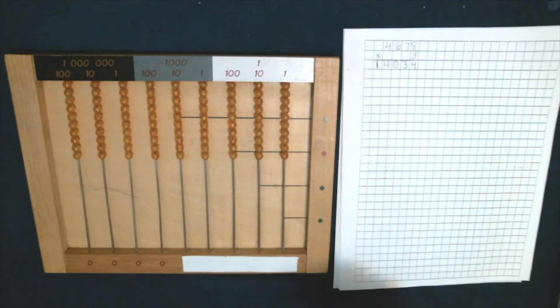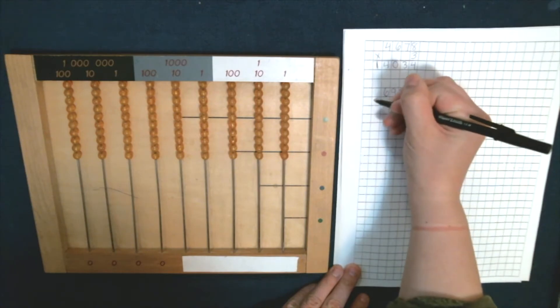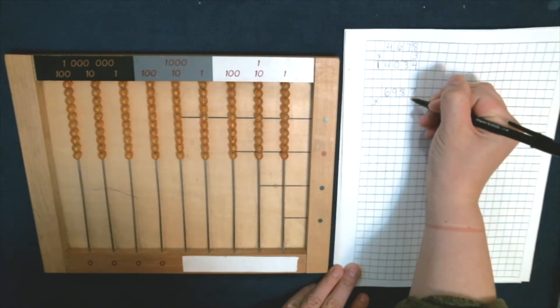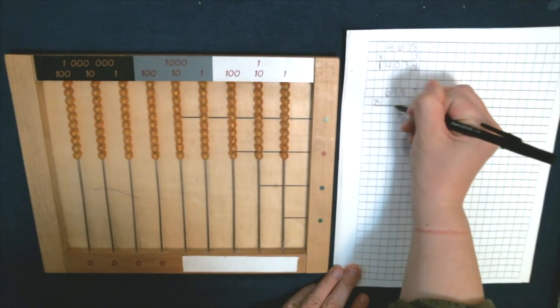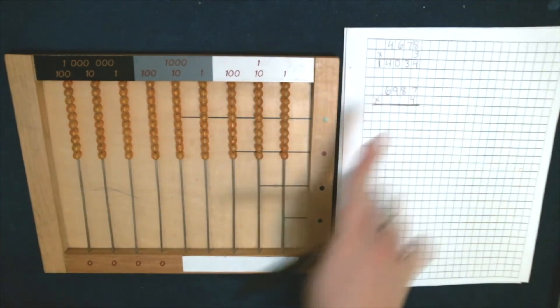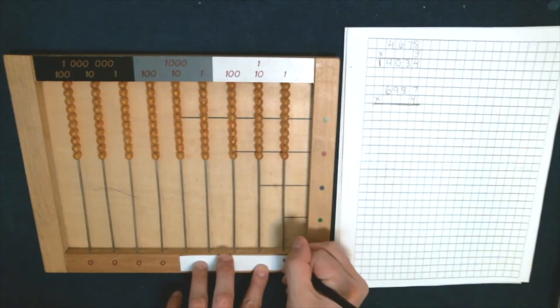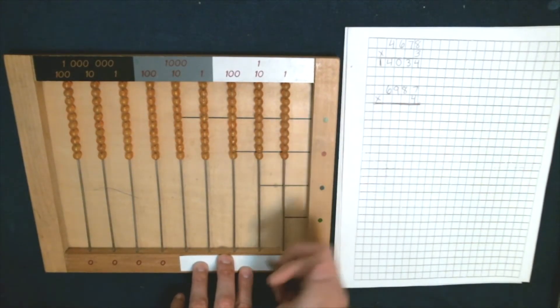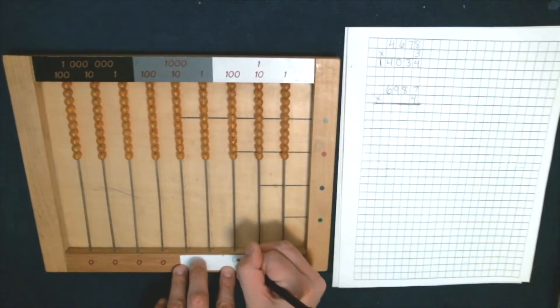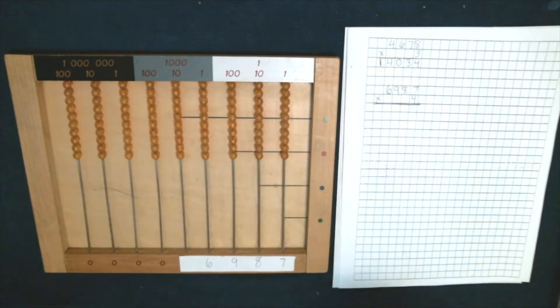We're going to do 6,987 times four. I'm going to write my multiplicand on my strip of paper and make sure to line up the units with the units wire, tens with the tens wire, so on and so forth. Make sure they line up with your wires on your bead frame.